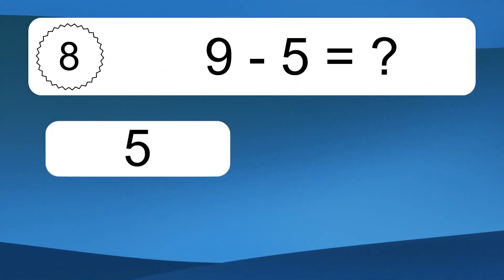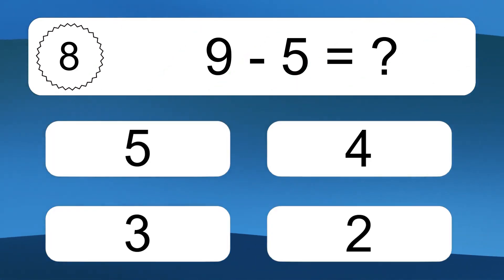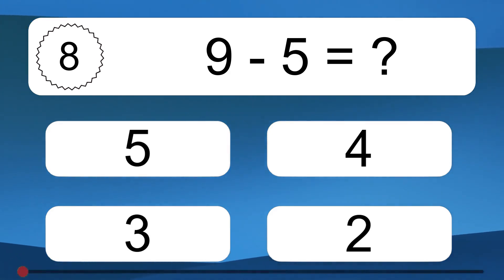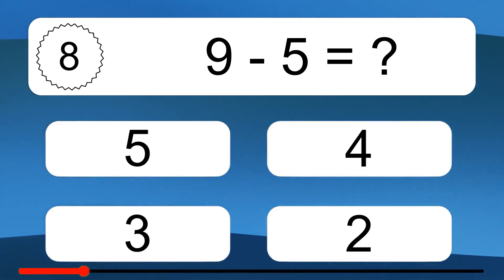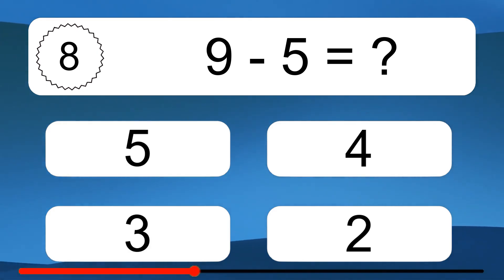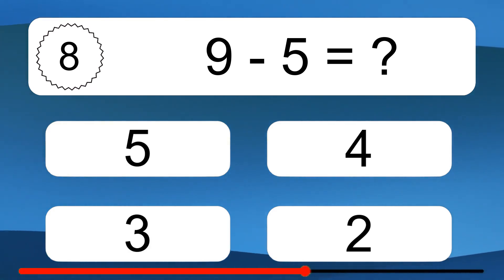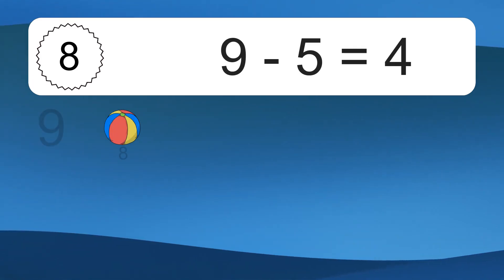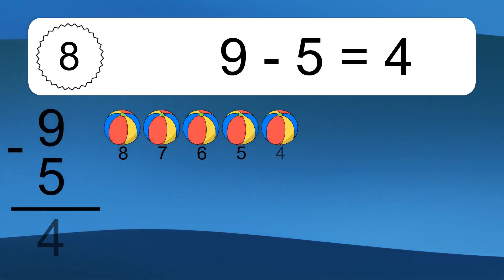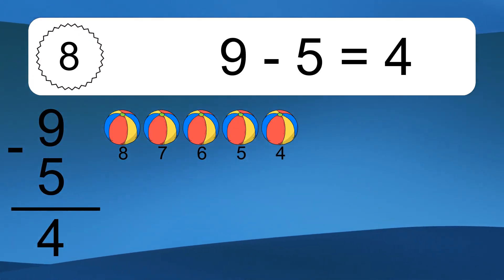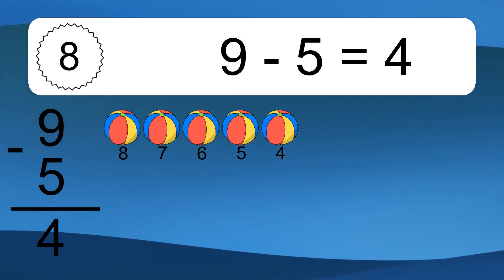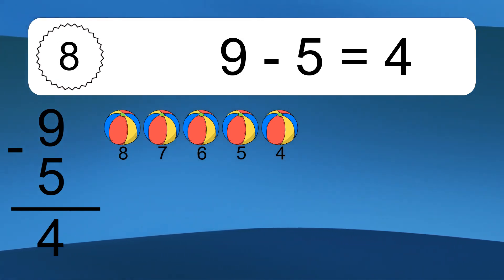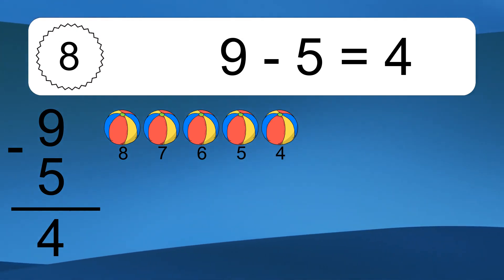9 minus 5 equals what? 9 minus 5 equals 4. Let's count it. 8, 7, 6, 5, 4.